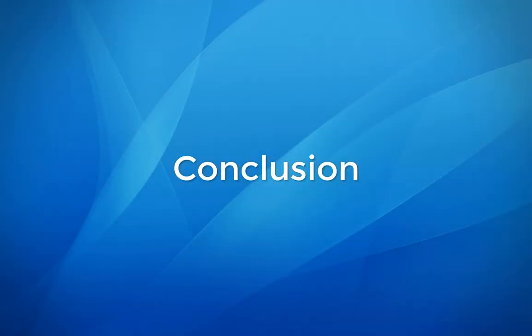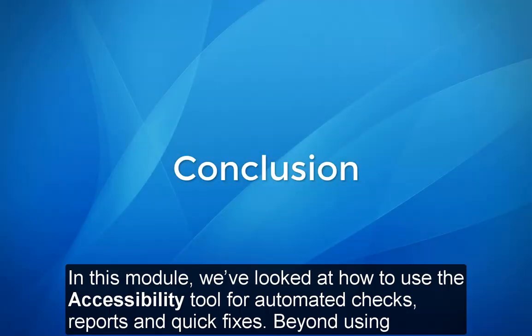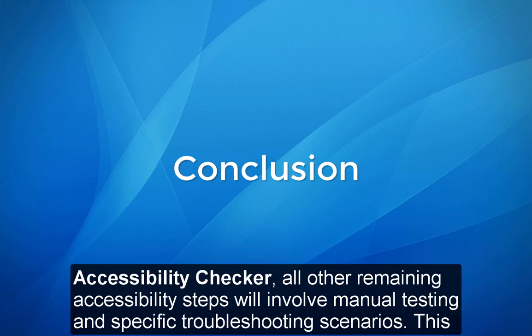Conclusion. In this module, we've looked at how to use the Accessibility Tool for automated checks, reports, and quick fixes. Beyond using the Accessibility Checker, all remaining accessibility steps will involve manual testing and specific troubleshooting scenarios. This marks the end of the formal PDF remediation process.